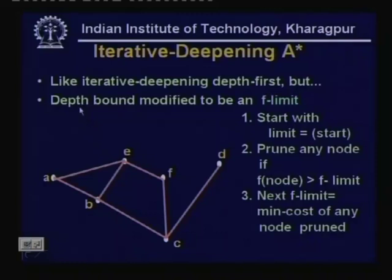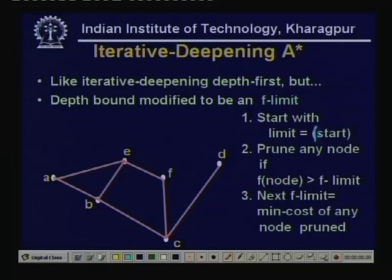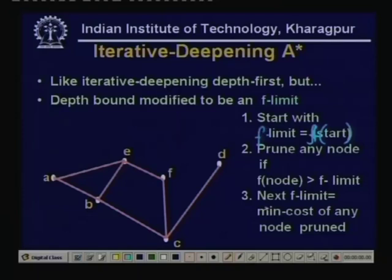IDA* is a depth-first iterative deepening search but the depth bound used is an f-limit. We start with the initial limit as the f value of the start node. With that limit we do a depth-first search, pruning any node if f of that node is greater than f-limit. After the current iteration, the next f-limit is chosen to be the minimum f value of any node that was pruned.